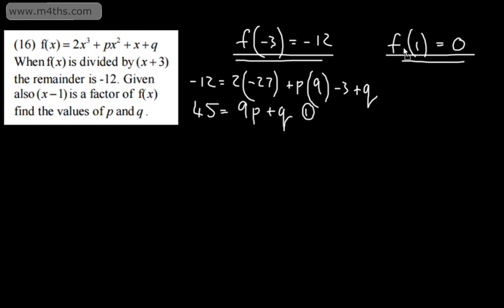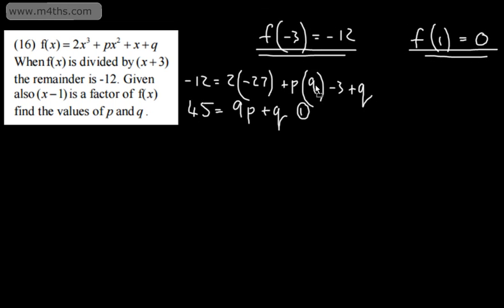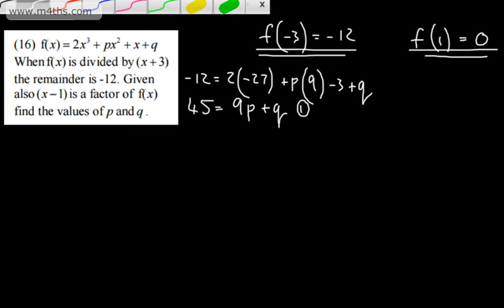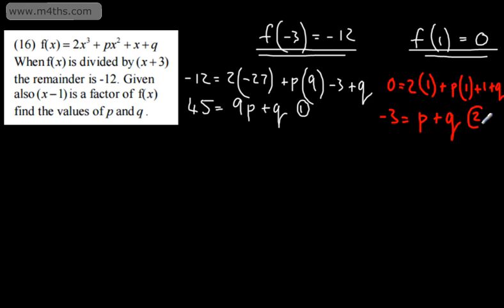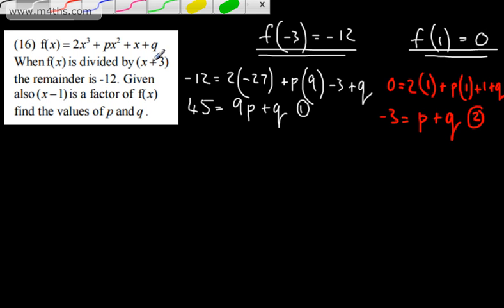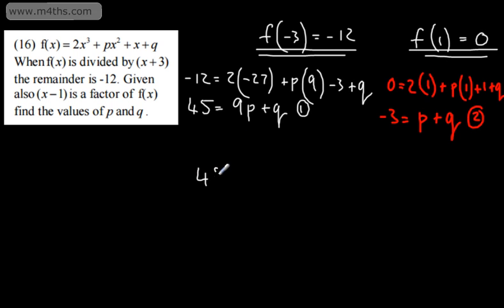Now for f(1) equals 0: 0 equals 2(1) plus p(1) plus 1 plus q, which gives 3 plus p plus q equals 0, so negative 3 equals p plus q. I'll call this equation 2. Writing them together: equation 1 is 9p plus q equals 45, and equation 2 is p plus q equals negative 3.